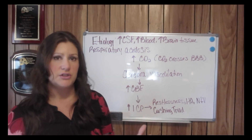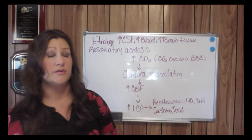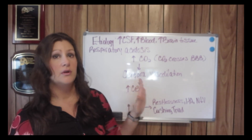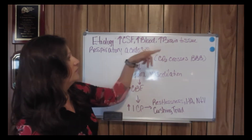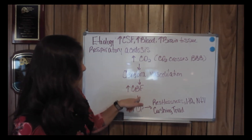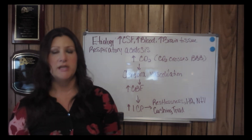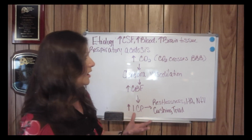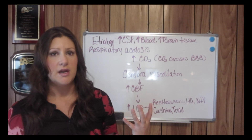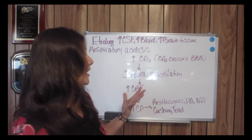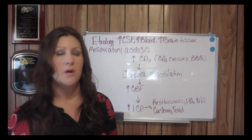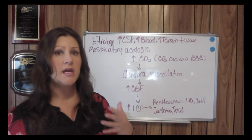Cerebral vasodilation from the increased amount of CO2 within the circulation increases cerebral blood flow, which increases the amount of blood within the brain. With that increase in cerebral blood flow, you have increased intracranial pressure. We always talk about early manifestations first, because hopefully as the nurse, you know your job is to catch these early signs and symptoms and do something to correct the underlying etiology — in this case, the respiratory acidosis.